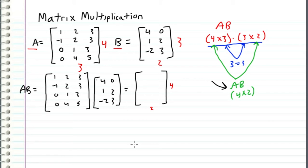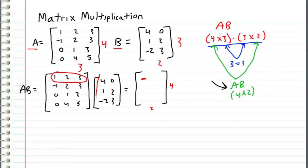Now we want to fill out the entries of this product matrix. I'm going to consider the top left entry, which corresponds to the first row and first column. I'm going to take the first row of A and the first column of B, and take the dot product of these two vectors. The dot product is the sum of the products of the corresponding components of each vector.